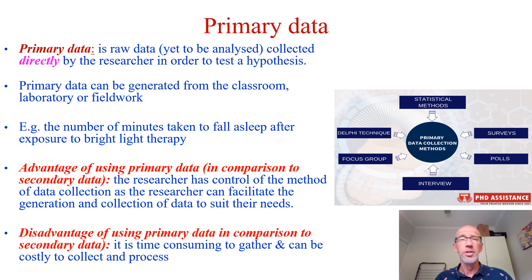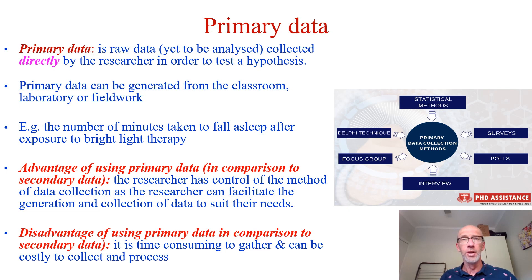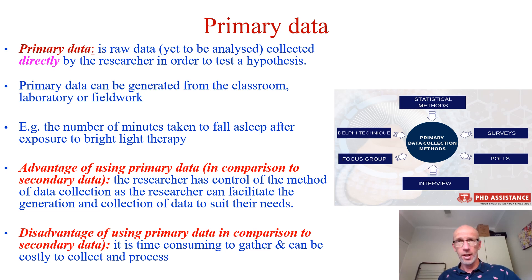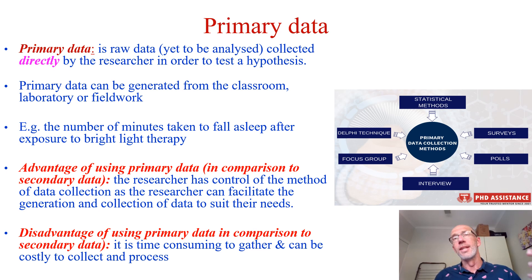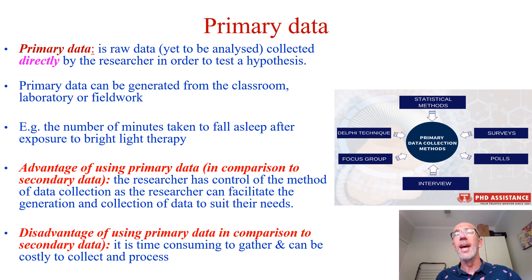The advantage of primary data compared to secondary data is that the researcher has complete control over their sampling, their sample size, their sampling method, and where they're getting participants from. They have control over the investigation design chosen — they might opt for a within-subjects design — and they can anticipate potential extraneous variables and act on them.